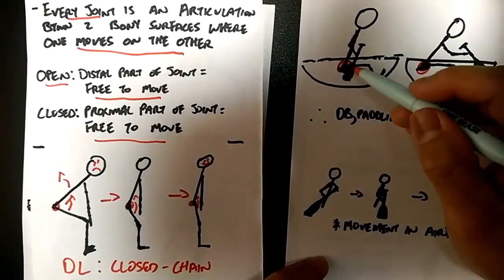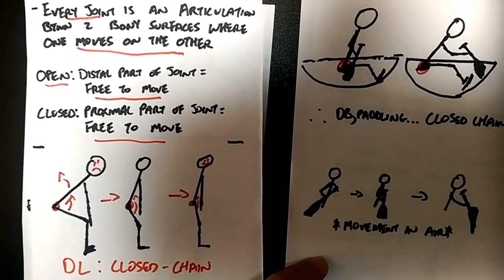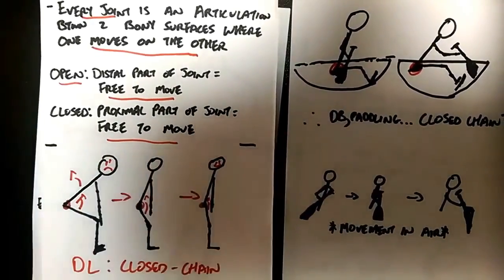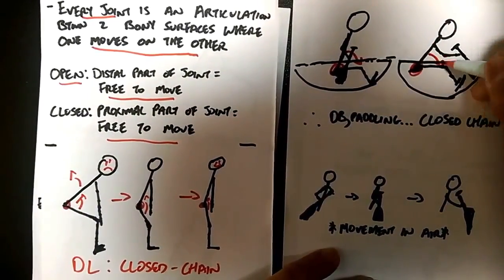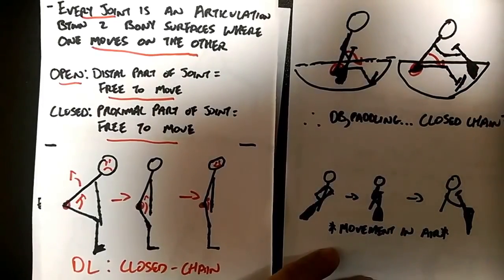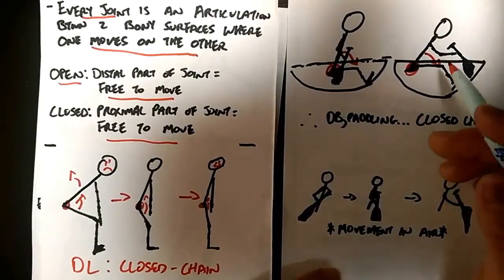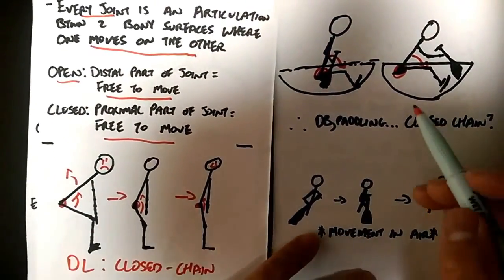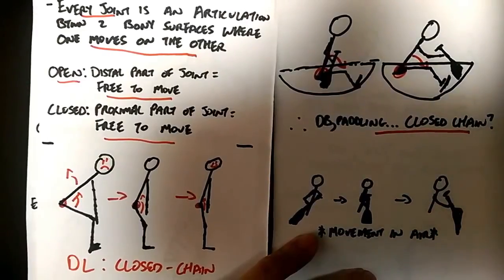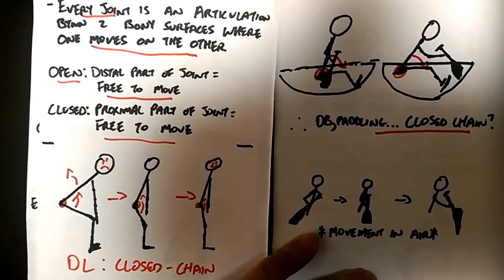Something has to move, right? Either your leg is moving towards your body or your body's moving towards the leg. And in a dragon boat or in any boat for that matter, it's clear that your body is the one moving towards the leg. So your pelvis is moving on the femur. So kind of going through the rules and everything I explained to you at first, then you might want to assume that paddling is a closed chain exercise. And that's a pretty safe assumption for the most part.